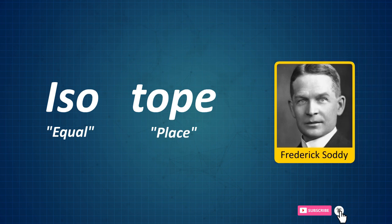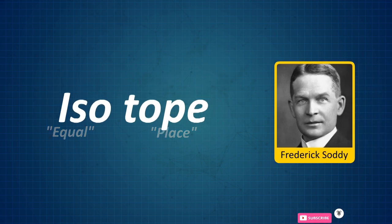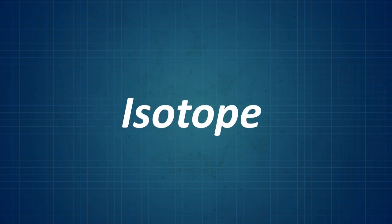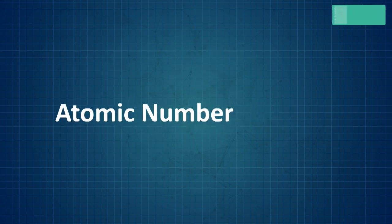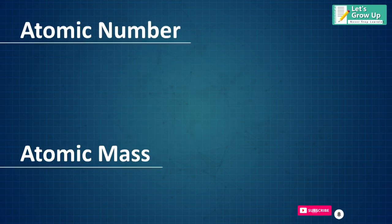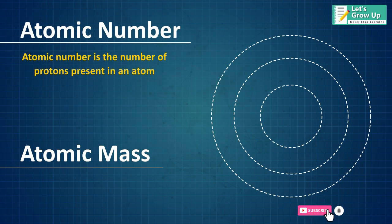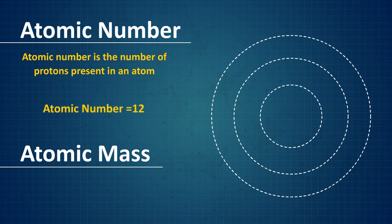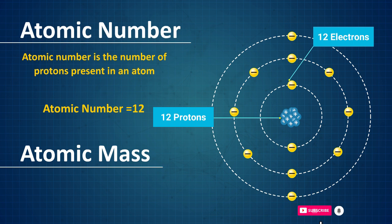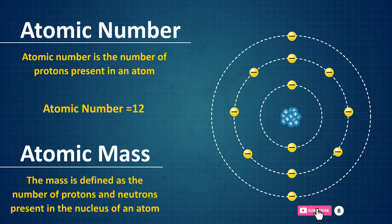Before going into isotopes, let's learn about atomic number and atomic mass. Atomic number is the number of protons present in an atom. For example, if the atomic number of an element is 12, then its atom contains 12 protons and 12 electrons. Atomic mass is defined as the number of protons and neutrons present in the nucleus of an atom.